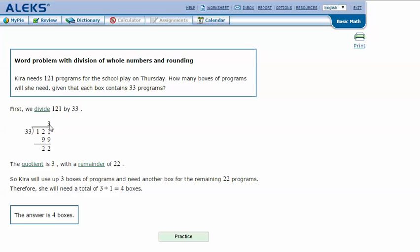132 would be too big, so I need to go down 1 to 3. 3 times 3 is 9 and 3 times this 3 is 9. 121 minus 99 is 22.